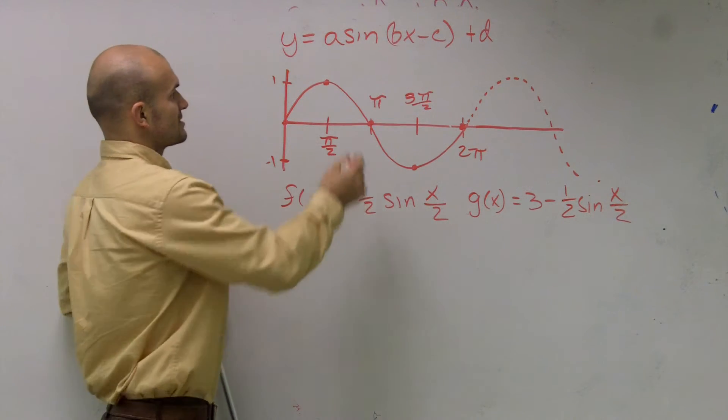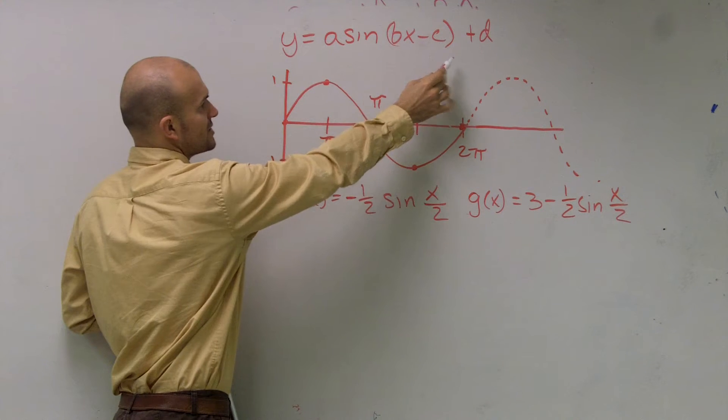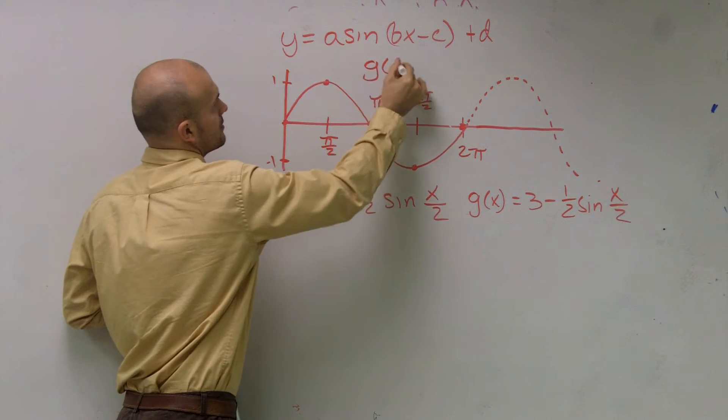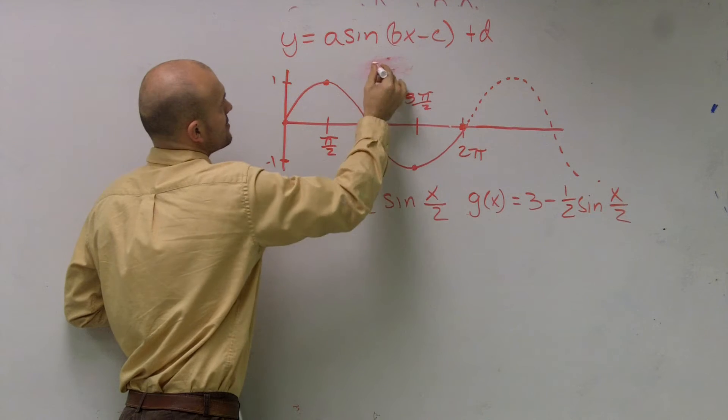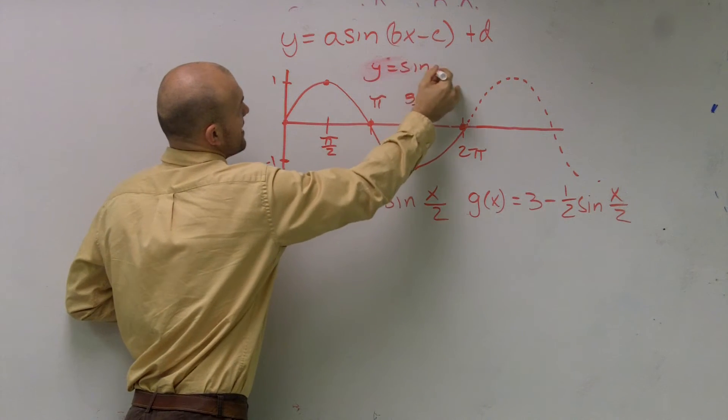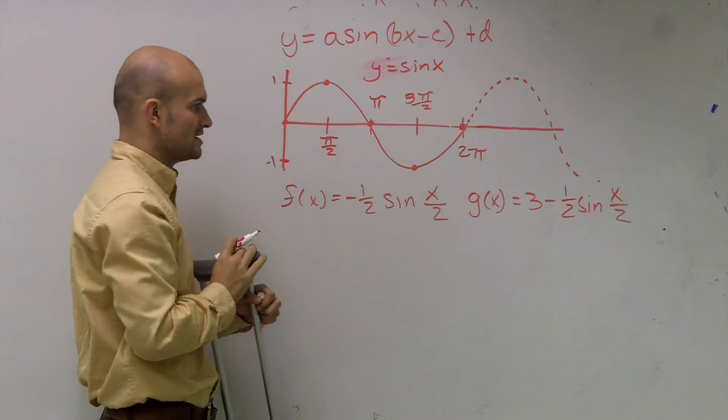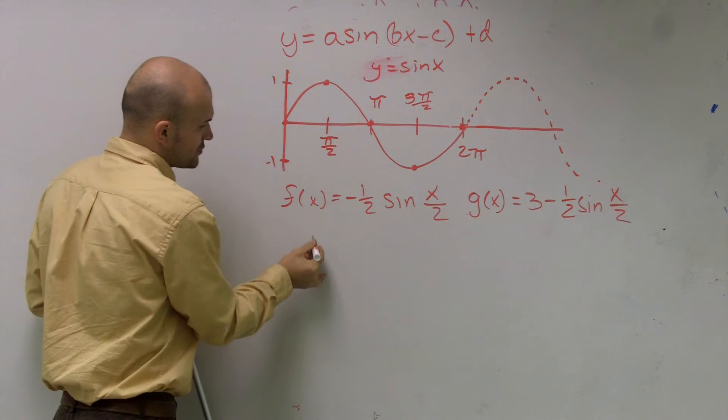So a couple things. Here's our general form of our equation. I said y equals, here's sine of x. So that is something unchanged. So now what we're going to do is we're going to draw the two transformations.